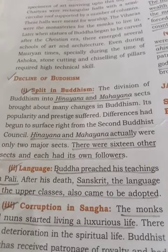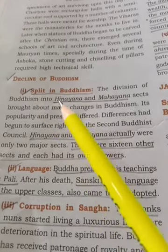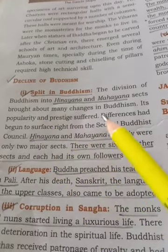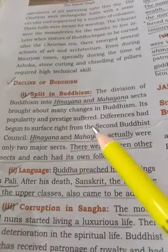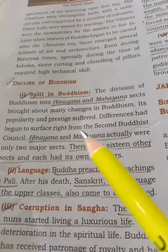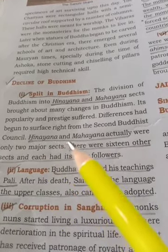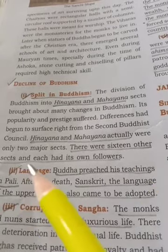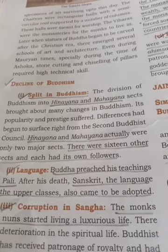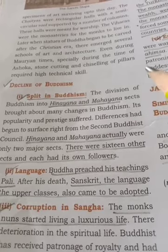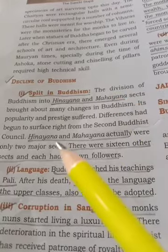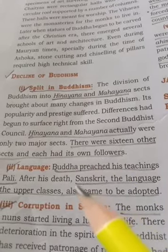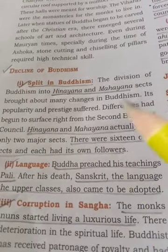The first factor and cause we see is the split in Buddhism. The division of Buddhism into Hinayana and Mahayana sects brought about many changes. Its popularity and prestige suffered. Differences had begun to surface right from the second Buddhist council. There were sixteen other sects as well, each with its own followers. Due to that, Buddhism declined.